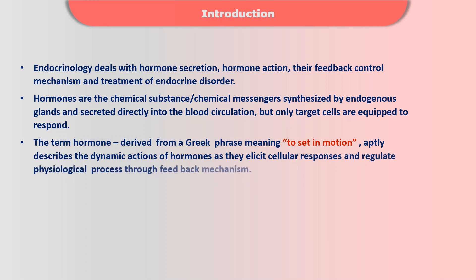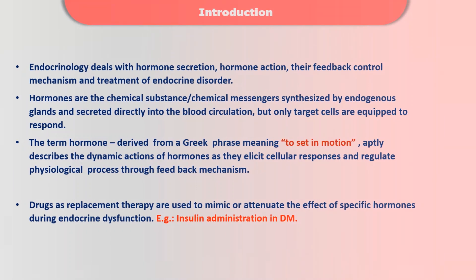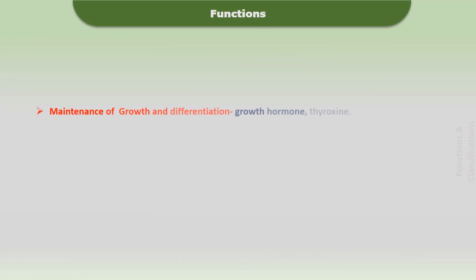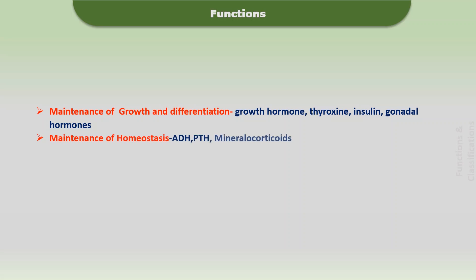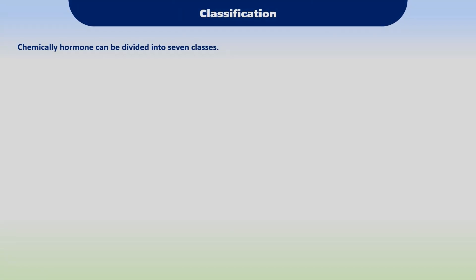The term hormone is derived from a Greek phrase meaning 'to set in motion,' which describes the dynamic action of hormones. Drugs used as replacement therapy are used to mimic or attenuate the effect of specific hormones during endocrine dysfunction. The significant functions of hormones include maintenance of growth and differentiation, maintenance of homeostasis, regulation of energy balance and metabolism, and reproduction and species propagation.